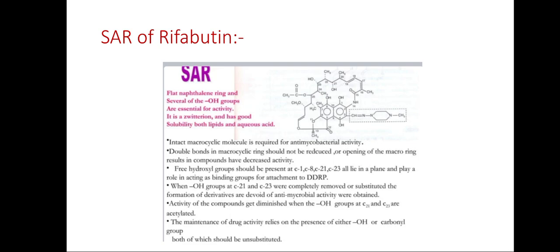Double bonds in the macrocyclic ring should not be reduced, and opening of the macrolide ring results in compounds with decreased activity. Free hydroxyl groups should be present at C1, C8, C21, and C23, all of which lie in a plane and play a role in acting as binding groups for attachment to DNA-dependent RNA polymerase. When OH groups at C21 and C23 were completely removed or substituted, derivatives devoid of antimicrobial activity were obtained. Activity of the compounds was also diminished when the OH groups at C21 and C23 are isolated.